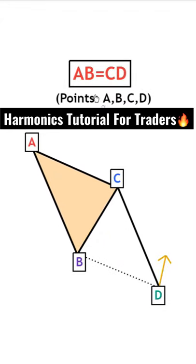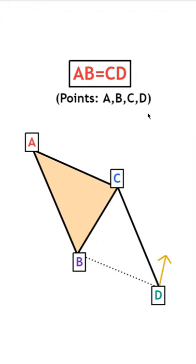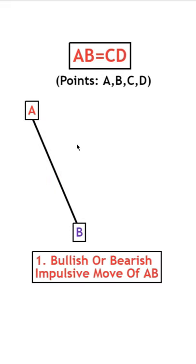This one will be covering the ABCD pattern which is pretty simple and straightforward and has a total of four points. For the first step starting off with points A and B, we'll need a bullish or bearish impulsive move and the direction will determine which type of setup this is.